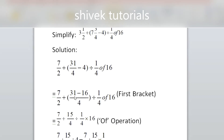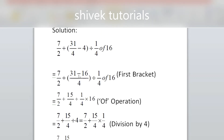Now we will solve the bracket first according to BODMAS: 31/4 minus 4. Since nothing is in the denominator of 4, we write 1 there. Cross multiply: 31 ones are 31, minus 4 fours are 16, divided by 4 ones are 4. We keep all other terms as they are and just solve this bracket. 31 minus 16 is 15, so the bracket becomes 15/4. The bracket is gone.